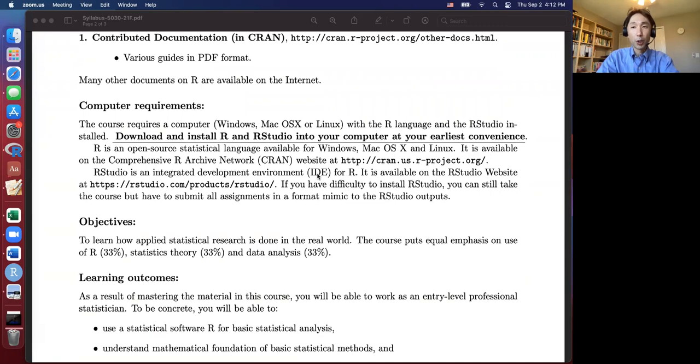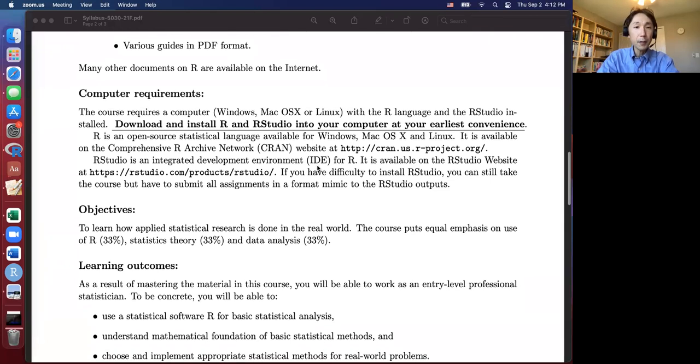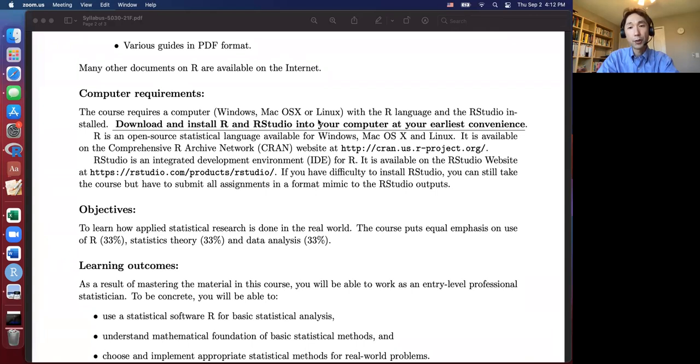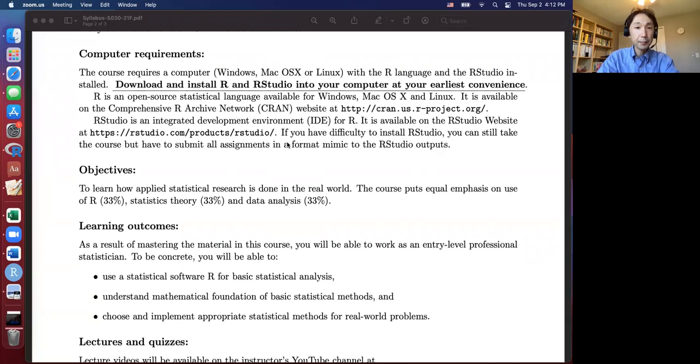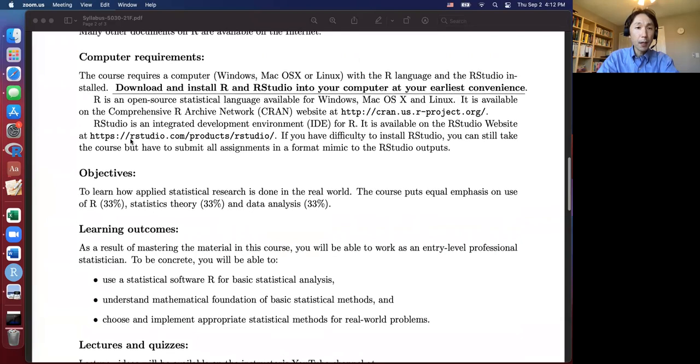This course is a computational statistics course, so definitely you need a computer to use. At least R should be installed and also RStudio is supposed to be installed. Download and install R and RStudio into your computer at your earliest convenience. To do quizzes and homework you need R and hopefully RStudio also. R is an open source software so you can download it for free for Windows, Mac OS, and Linux. Just access this website and the installation is very easy, you shouldn't have any problem.